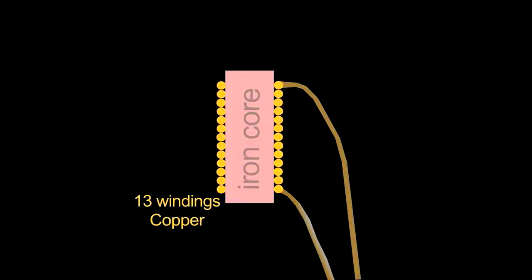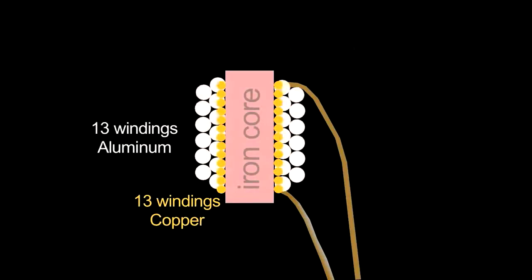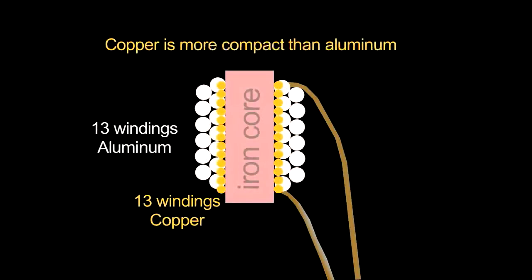Copper has such good conductivity that a solenoid made of it can be more compact and can handle higher current loads.